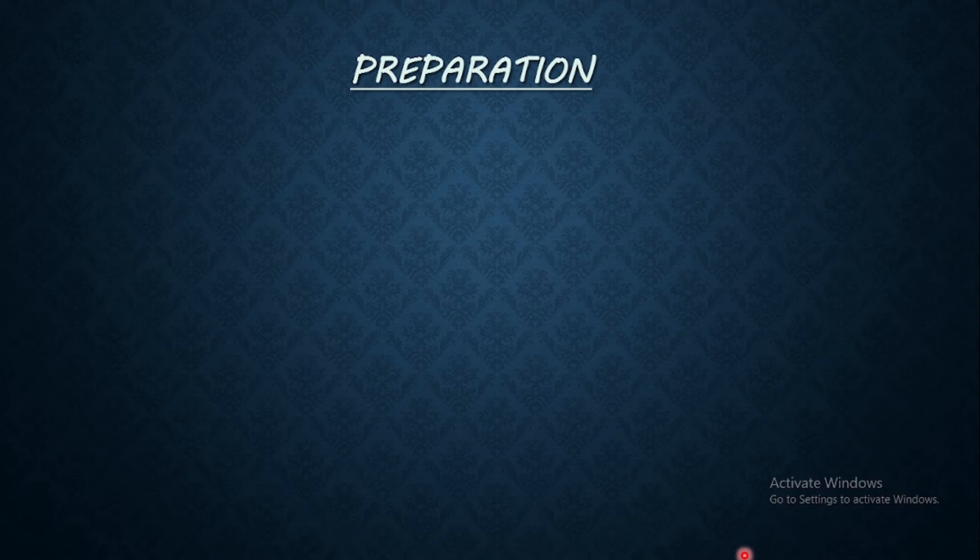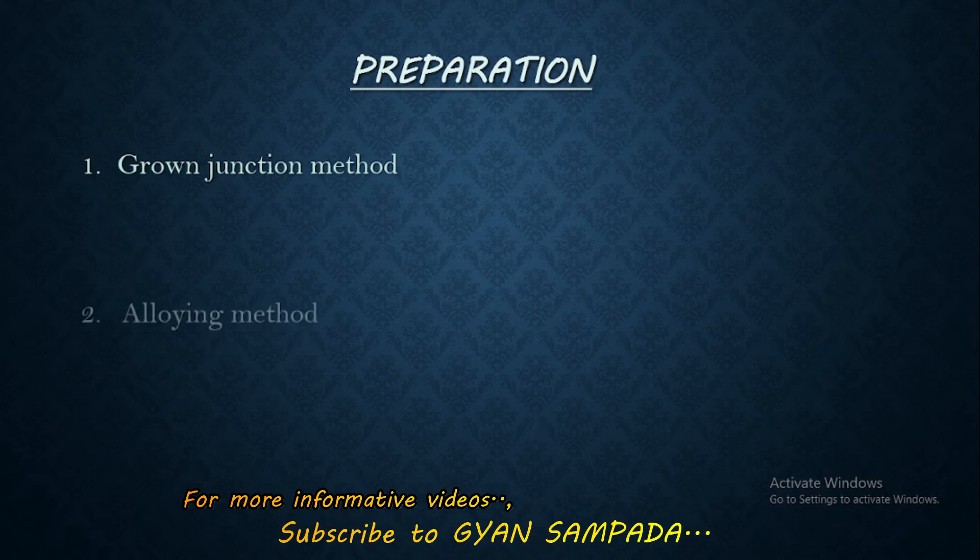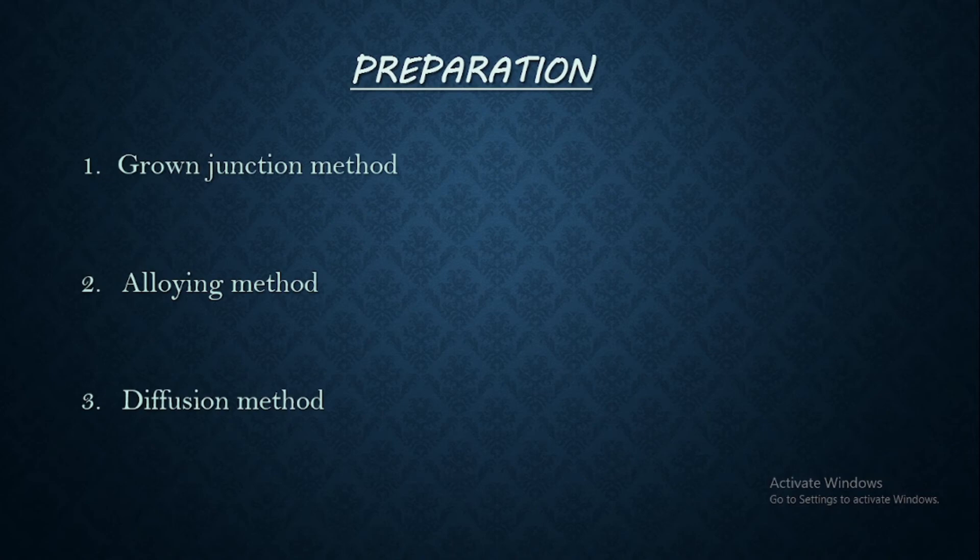And there are mainly three principal ways of preparing P-N junctions. First one is the grown junction method. Then the second method is alloying method. And the third method is diffusion method.